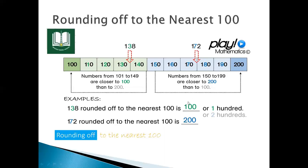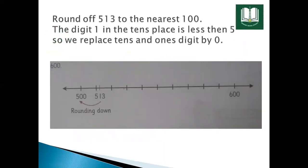So 138 rounded to the nearest 100 is 100. And for 172, the tens digit is 7, which is greater than 5, so it rounds to the nearest 200. Next example: round off 513 to the nearest 100.